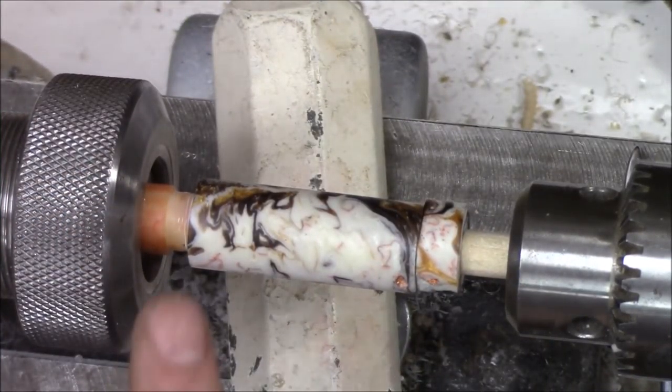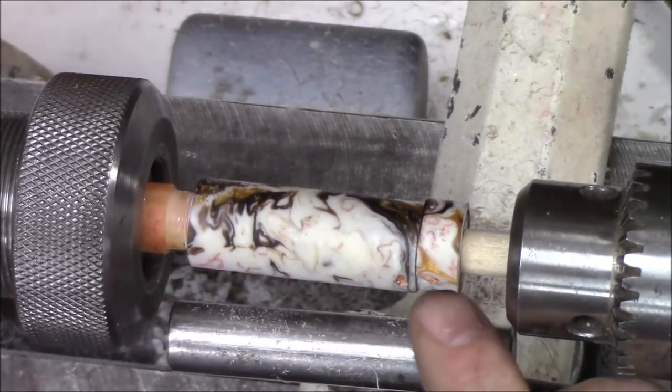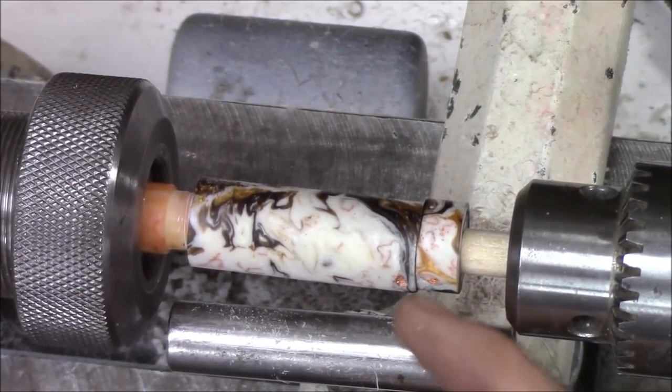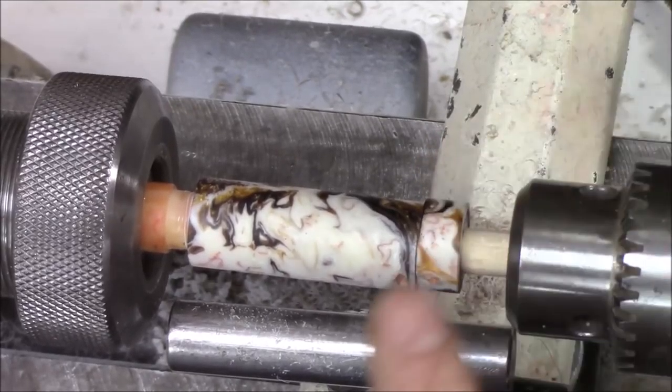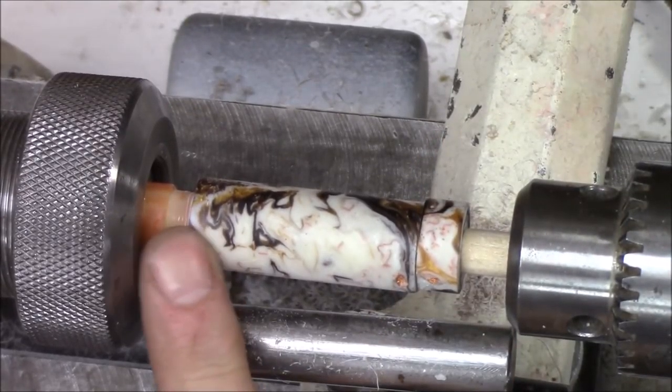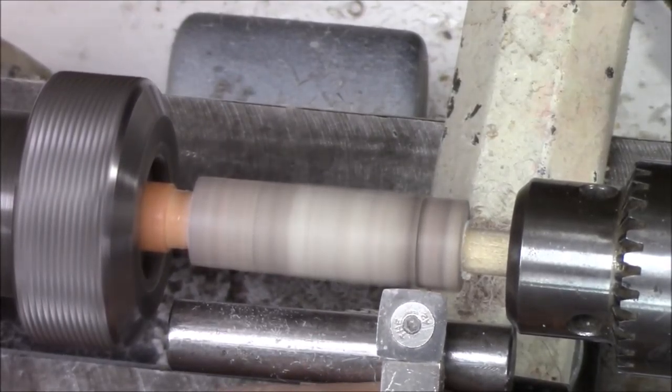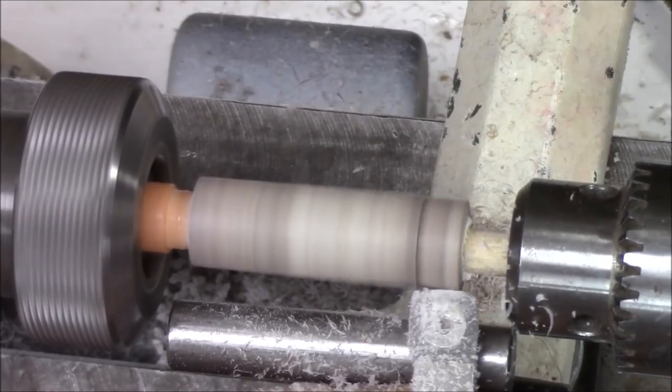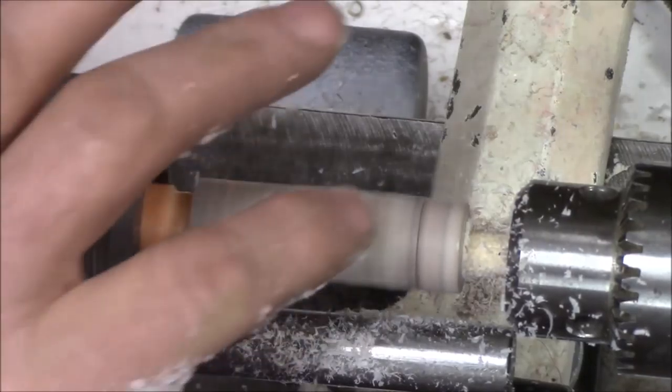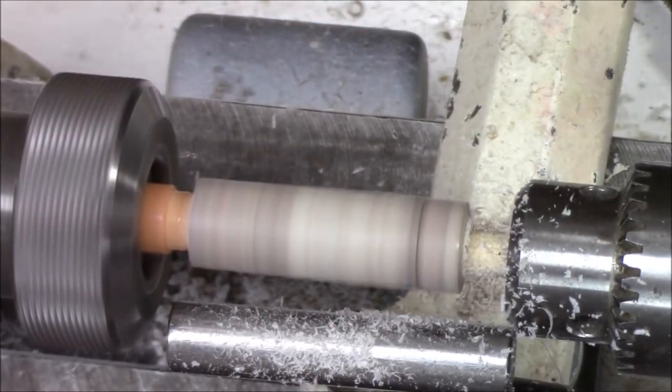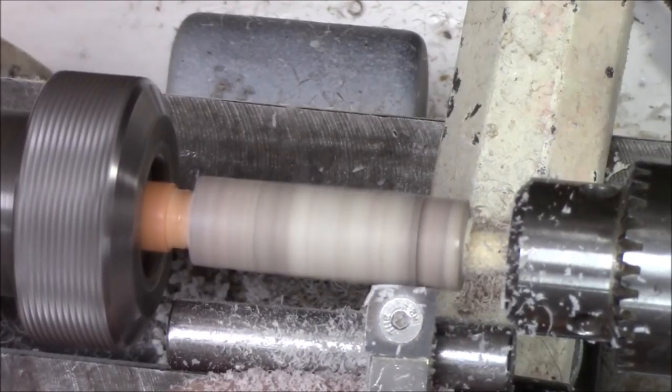So we'll go from 5 eighths down to a half. We've got a dowel rod pushing up against the cap end just to give it some support until we get ready to finish off the cap. So first of all we get everything to 5 eighths. I'm being real careful down here at this transition where the cap and the finial meet, so I'm trying to get that smoothed up first.